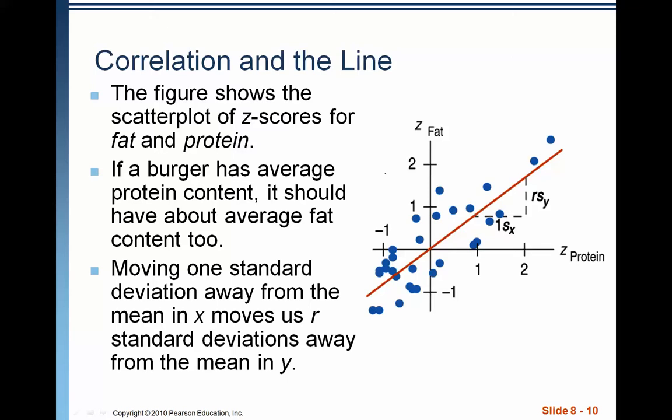We can take all of the data and we can convert it to Z scores. Notice that's been done with the Burger King data over here. A Burger King item with average protein content should be about the average fat content too, which is this point right here. And as we learned in the last chapter, going one standard deviation on the X means that we're going to go R standard deviations on the Y.